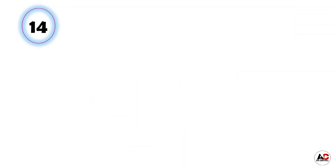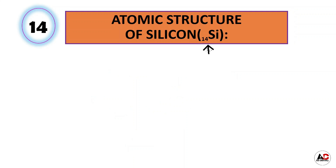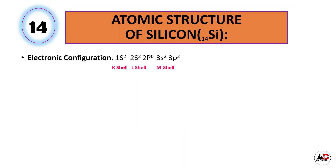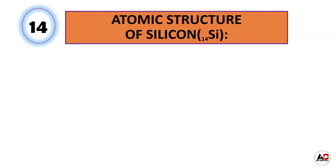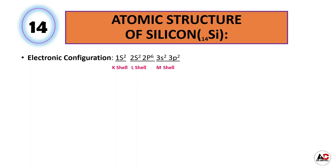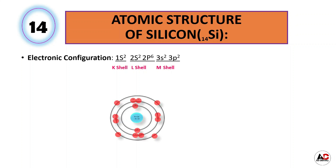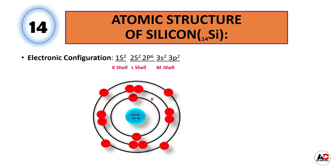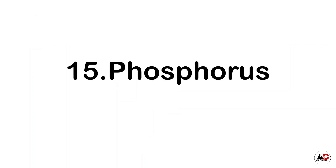Now the next element is silicon. The atomic number of silicon is 14, meaning it has a total of 14 electrons. So the electronic configuration of silicon is 1s2, 2s2, 2p6, 3s2, and 3p2. With the help of this electronic configuration, the atomic structure of silicon will be like this. It has 14 protons and 14 neutrons inside the nucleus and 14 electrons around the nucleus: 2 are in the K shell, 8 are in the L shell, and 4 are in the M shell.